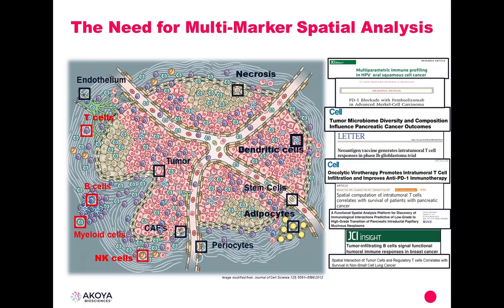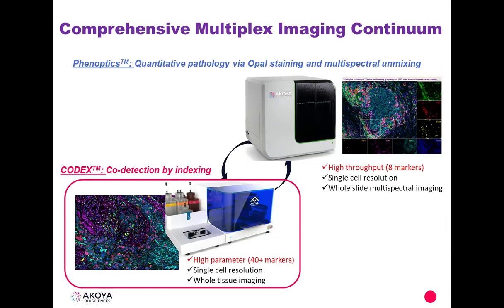ACOIA has two platforms for multi-marker spatial analysis. There is the PhenoOptic portfolio, which allows for high-throughput tissue multiplexing via opal staining and multispectral unmixing. And then there is CODEX, which is co-detection by indexing — a high-parameter modality for multi-marker spatial analysis, allowing detection of a high number of markers on cells with single-cell resolution.